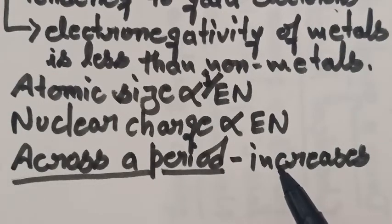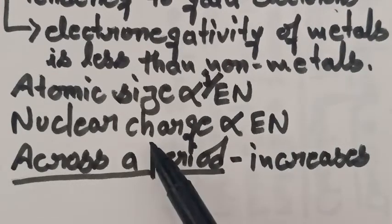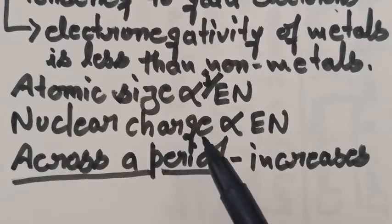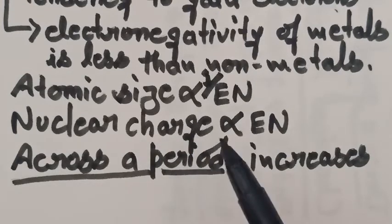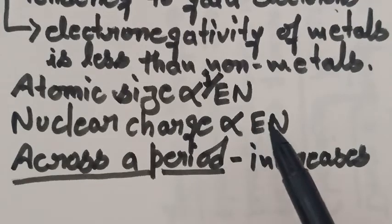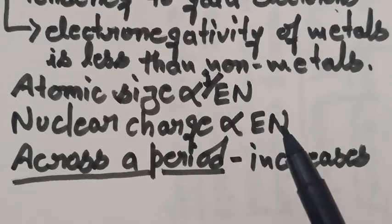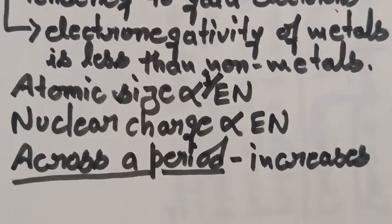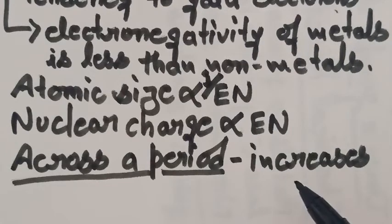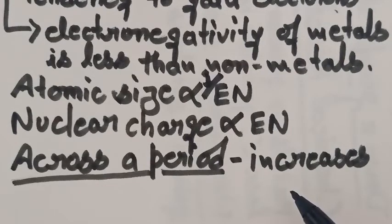You can also explain this in terms of nuclear charge. Nuclear charge increases from left to right, and hence electronegativity also increases. Ultimately, elements with high values of electronegativity are usually non-metals.